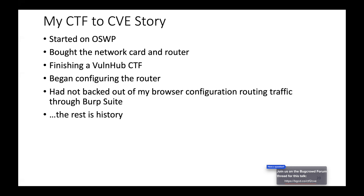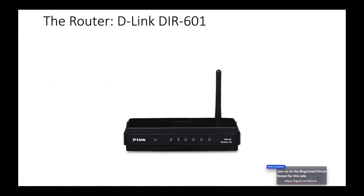I had just finished a VulnHub CTF and I had my system configured for Burp. I was like, 'okay, I'm going to configure my router,' and from there I logged in and started seeing things — 'this is interesting, I'm going to take a look.' The router is a D-Link DIR-601. It is one of the two that Offensive Security asks that people get when doing OSWP.